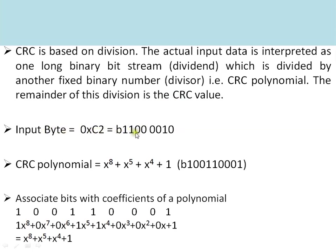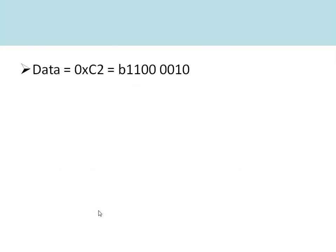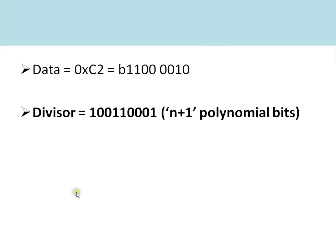If we consider the information byte to be transmitted is C2, its binary is 11000010. The CRC polynomial selected is x^8 + x^5 + x^4 + 1, which is one of the CRC polynomials — the 1-Wire protocol uses this one. The CRC polynomial bits are 100110001. These bits are the coefficients of this polynomial. The divisor is the polynomial which has n+1 bits, where n is the number of CRC bits. Here, n=8, so the polynomial has 9 bits.